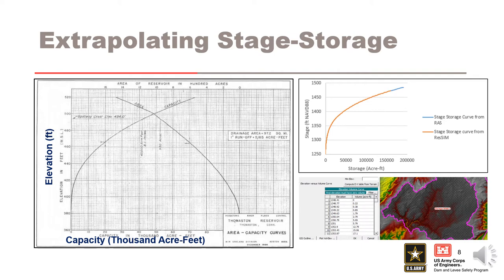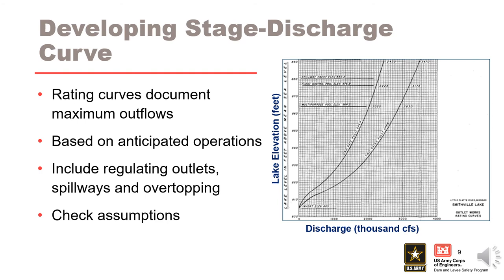The stage storage discharge function must be monotonically increasing, which means that both storage and discharge must increase with increasing values of stage. The stage versus discharge relationship, also referred to as a stage discharge function, relates water surface elevation to the total discharge associated with the outlet works, powerhouses, spillway, overtopping, and any other discharge facility.